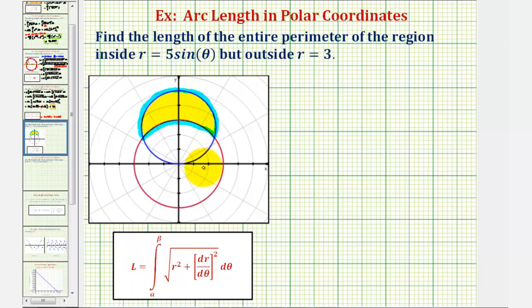Alpha and beta, the limits of integration, would be the angle that passes through this point of intersection in the first quadrant and this point of intersection in the second quadrant. So alpha would be this angle here in the first quadrant, and beta would be this angle here in the second quadrant.